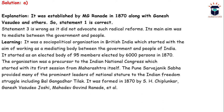Poona Sarvajanik Sabha was established by M.G. Ranade in 1870 along with Ganesh Vasudeo Joshi, S.H. Chiplunkar, and others; Bal Gangadhar Tilak was also associated with it. Its main purpose was to act as a mediating body between the government and people of India. It was an elected body of 95 members elected by 6,000 persons and served as a precursor to the Indian National Congress, providing prominent national leaders to the freedom struggle.